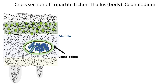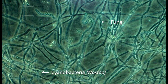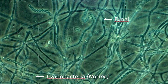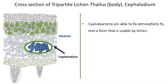This cephalodium formation is relevant only to tripartite lichens. Bipartite lichens that have only a cyanobacterial symbiont do not usually form cephalodia. Instead, the cyanobacteria are widely distributed throughout the lichen. One of the unique abilities of cyanobacteria is their capability to fix atmospheric nitrogen into a form that is usable by the lichen.